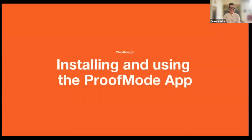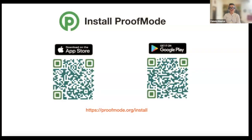We have a practical part of the session in which you get to test the app. If you haven't installed the app, you can get it from the QR codes on the screen or by going to proofmode.org/install. If you installed the app on Android last week, there is a new version, so I recommend getting the update.